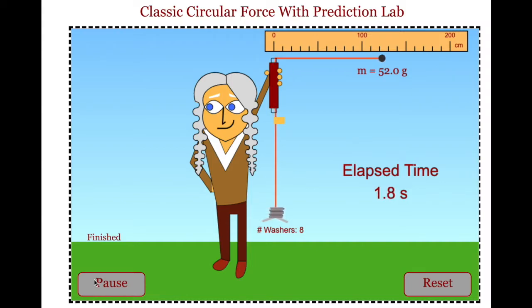I would suggest counting 10 revolutions, then use the radius of the circle to find the circumference of the circle. Then I would use the fact that it did 10 revolutions in a certain amount of time to get the speed of the stopper.